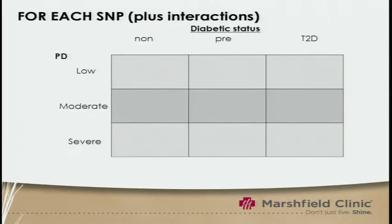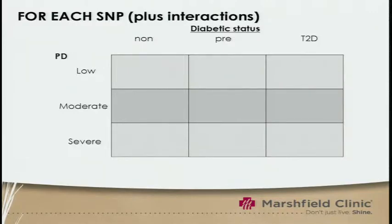How this might work would be to have non-diabetic patients, pre-diabetics, and type 2 diabetics, and then compare them in terms of periodontal disease state for each SNP, and similarly for the oral microbiome.